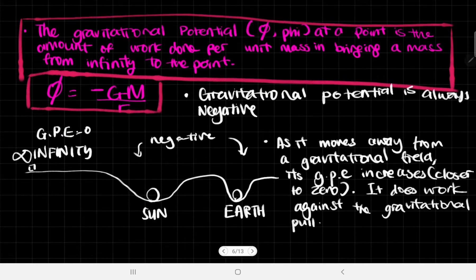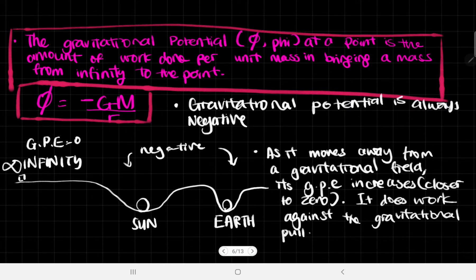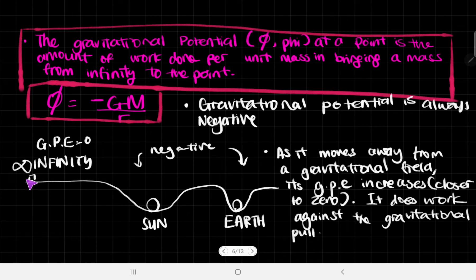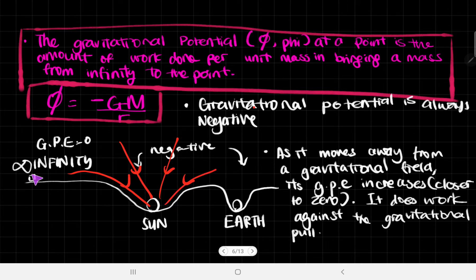So if we read the definition again: it is the amount of work done per unit mass in bringing a mass from infinity to the point. If we can picture the field lines, we are doing work not against the field lines, but literally in the direction of the field lines.